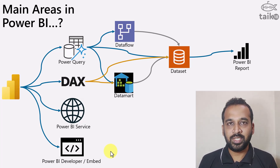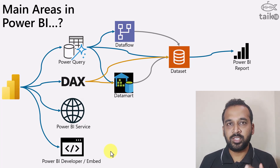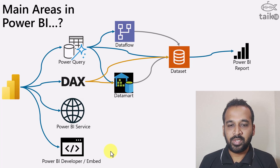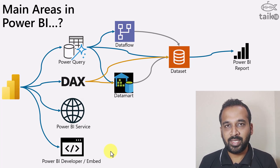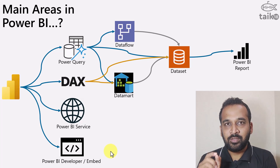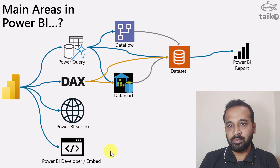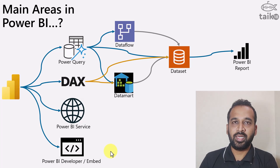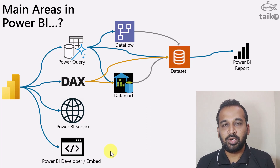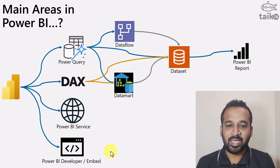In Power BI desktop it looks like a single file, but when you publish it into Power BI service, it converts into two different files — one is a report and the other is a data set. That's why we can create multiple reports from one single data set in Power BI service. When you create a data flow, it won't create a report automatically — you need to add it into Power BI desktop and then use it in your report. Whereas for Power BI data mart, it will automatically create a data set, and then you can create your Power BI reports on top of that.